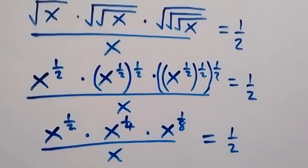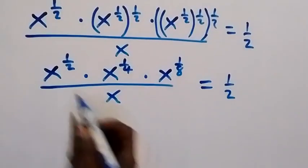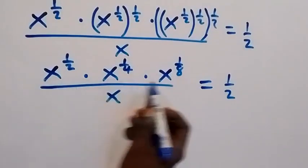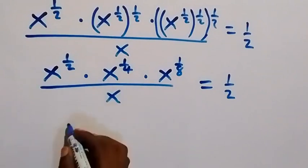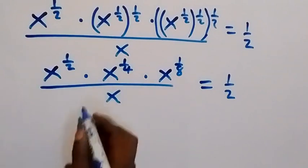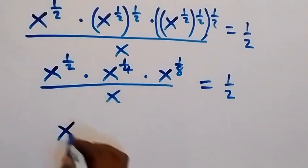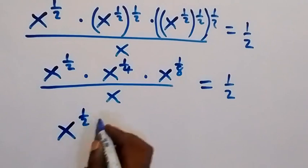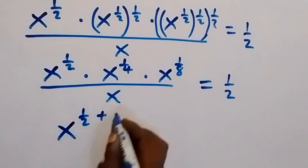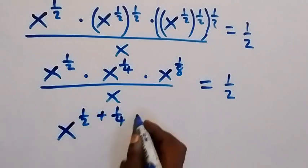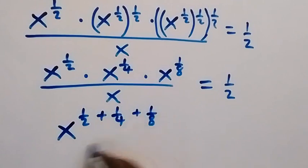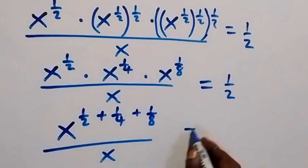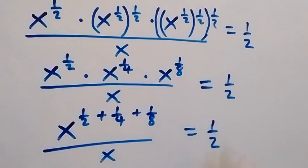All over x which is equal to one over two. From here we have the same base multiplied, so we apply the law of indices — we sum the powers — and we have x raised to power one half plus one over four plus one over eight, then over x equals one half.